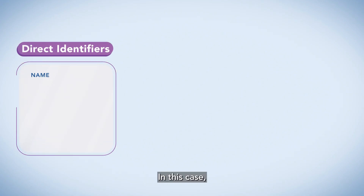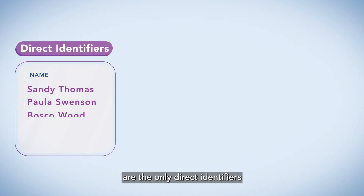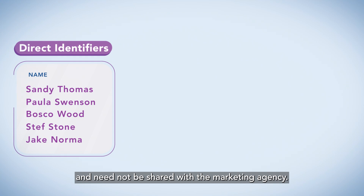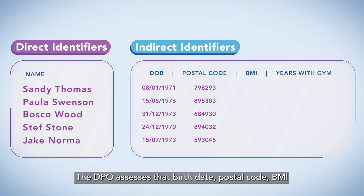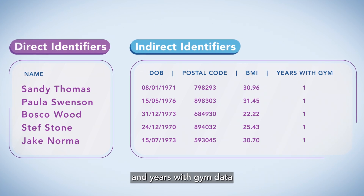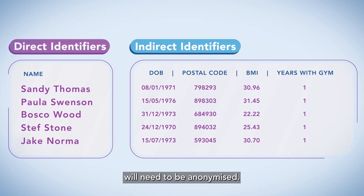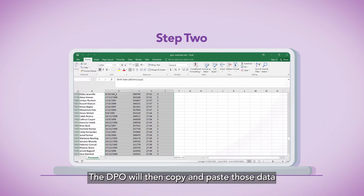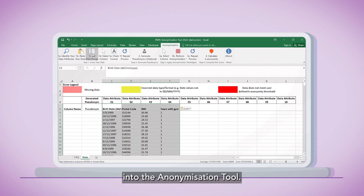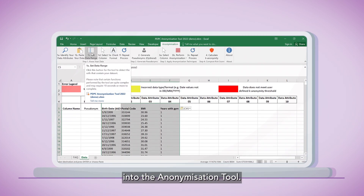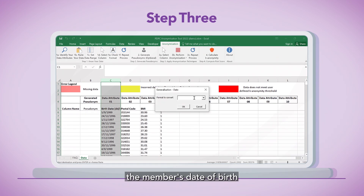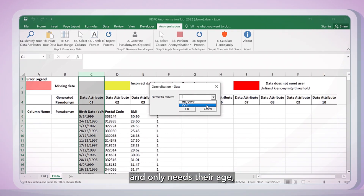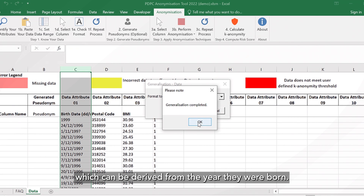In this case, the Jim members' names are the only direct identifiers and need not be shared with the marketing agency. The DPO assesses that birth date, postal code, BMI, and years with Jim data will need to be anonymized. The DPO will then copy and paste those data into the Anonymization Tool. The marketing agency does not need the member's date of birth and only needs their age, which can be derived from the year they were born.